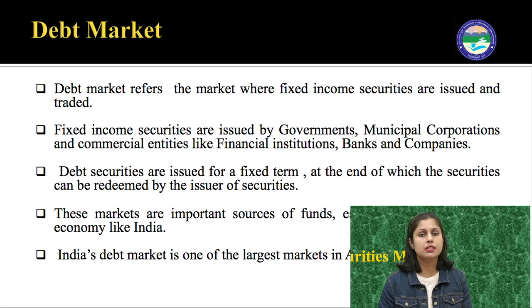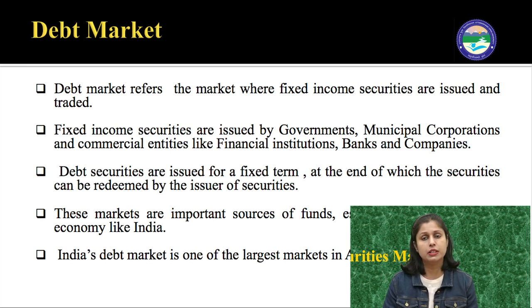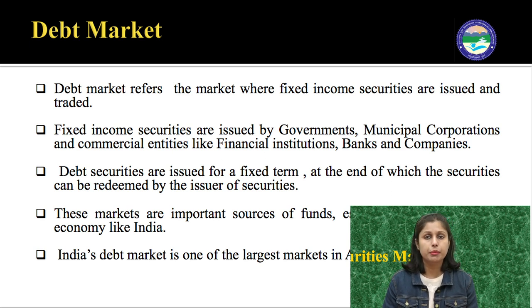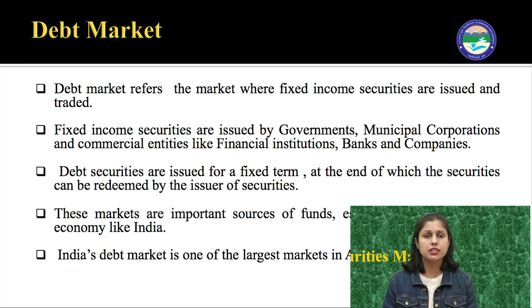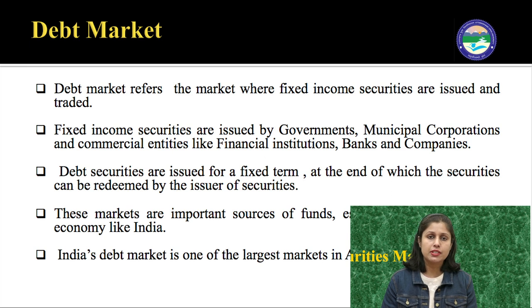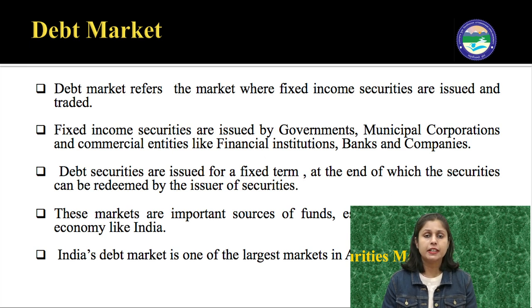The next market is the debt market. The debt market refers to the market where fixed income securities — like debentures and bonds — are issued and traded. Fixed income securities are issued by government, municipal corporations, and commercial entities like financial institutions, banks, and companies. Debt securities are issued for a fixed term, at the end of which the securities can be redeemed by the issuer and investors get their money back with interest. These markets are an important source of funds, especially in a developing economy like India. India's debt market is the largest in Asia.